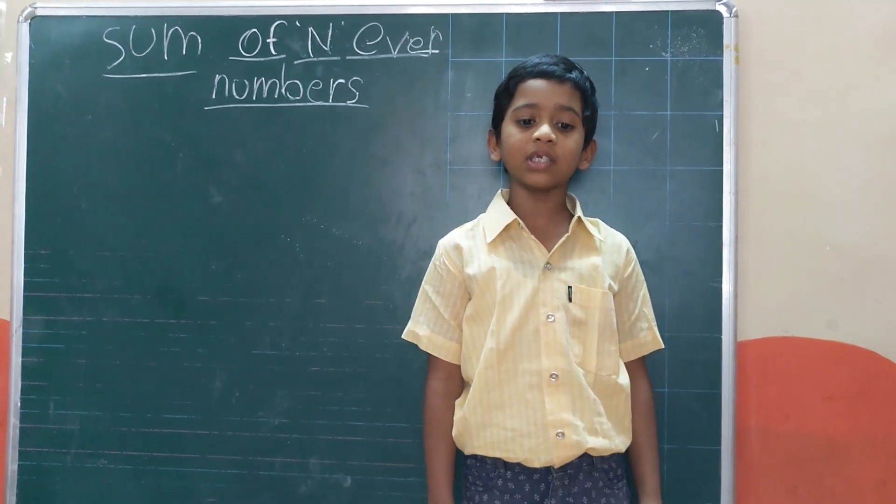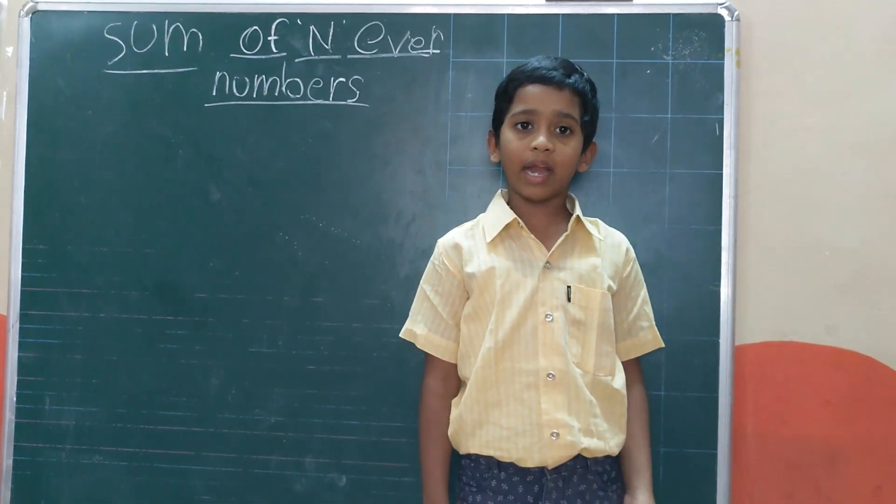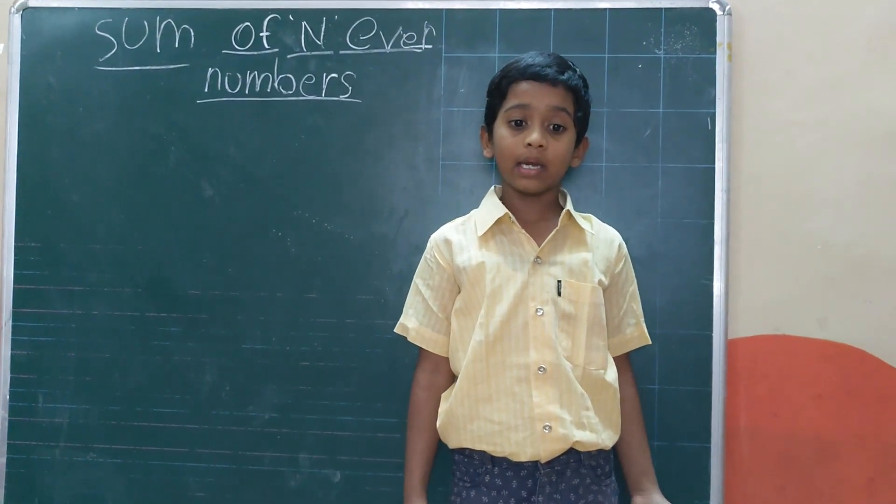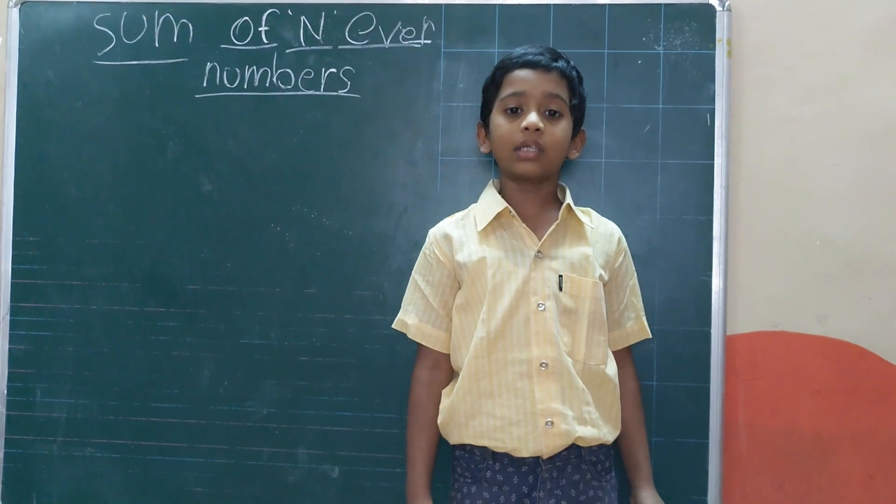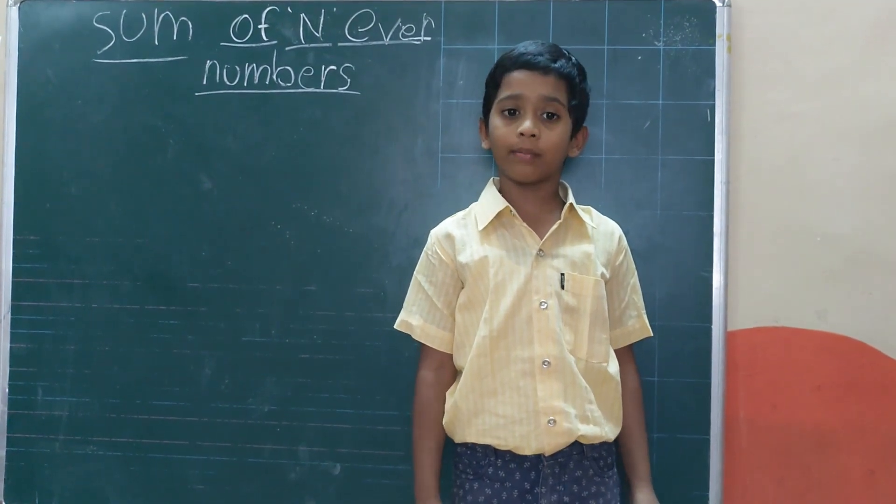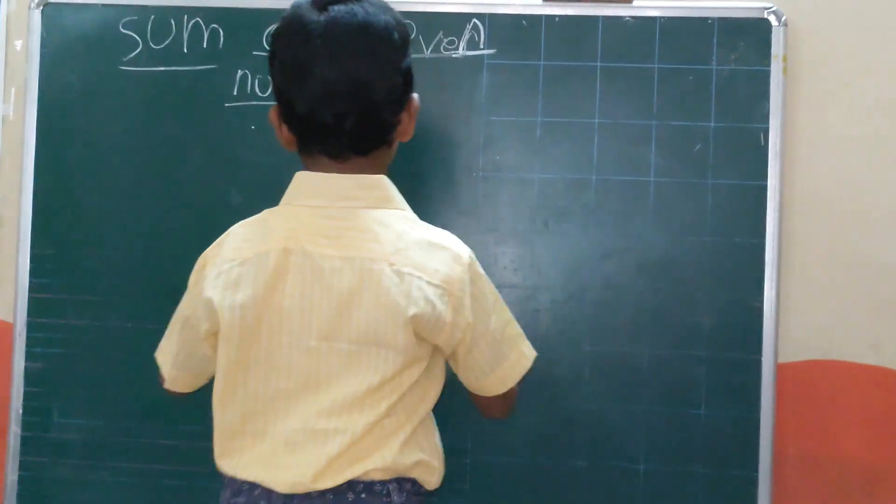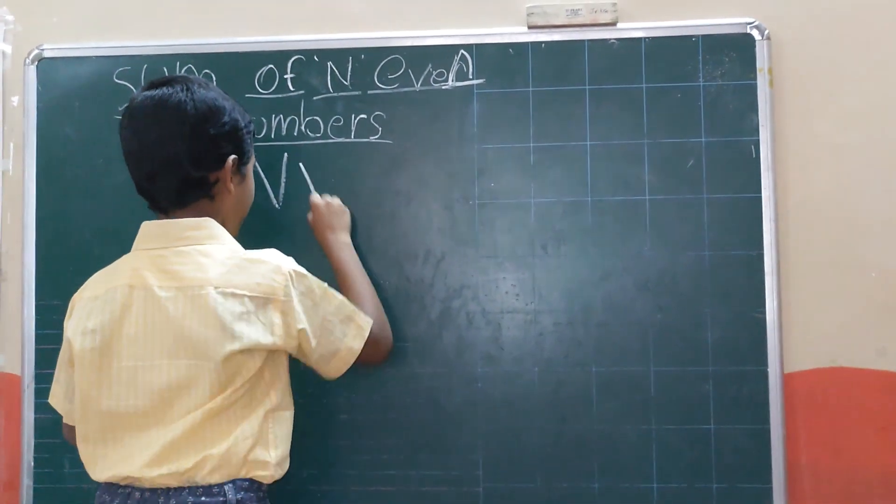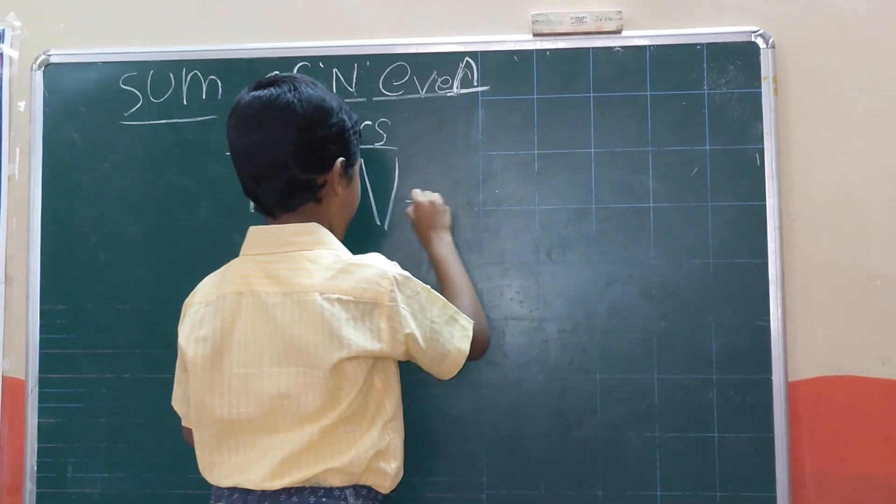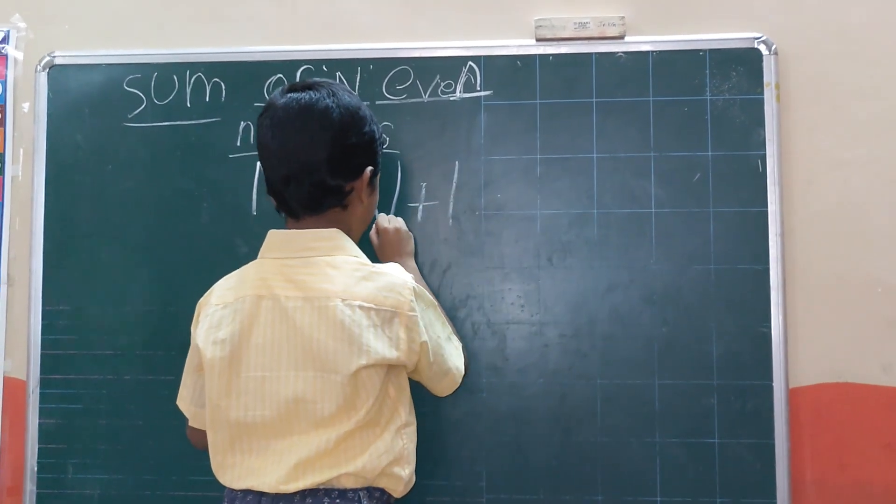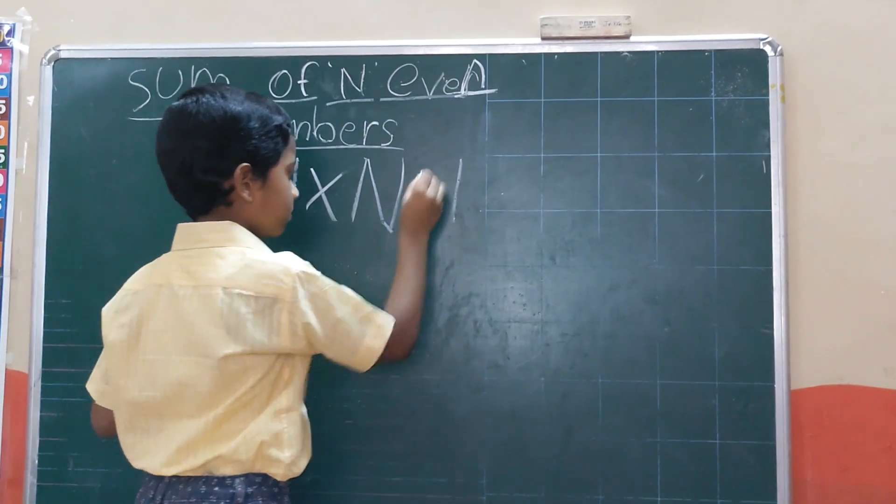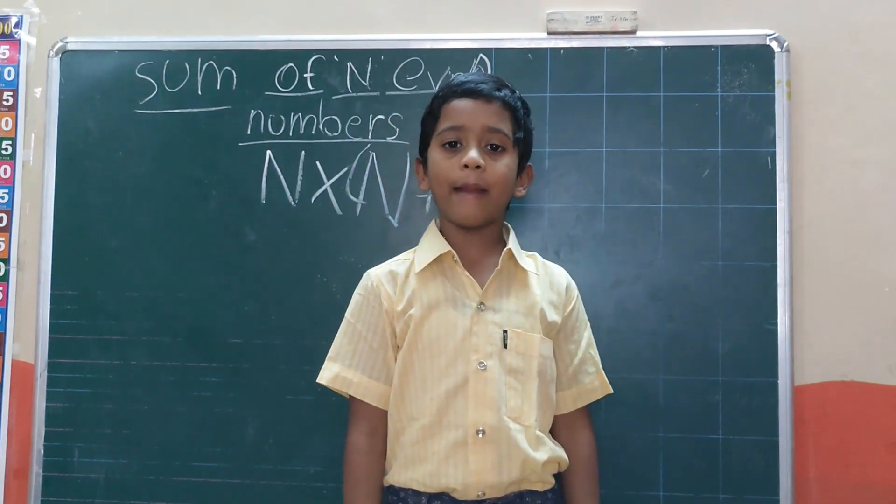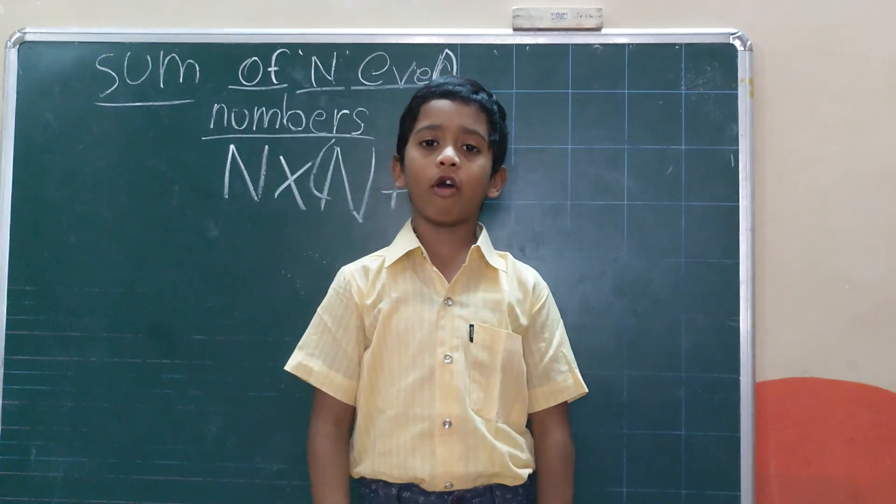Then what we will do friends? We can't write even numbers 1 to 100 like this friends. Next, then what we have, we can use one formula. The formula is n into n plus 1. That is the formula.